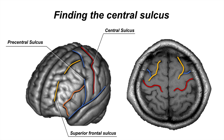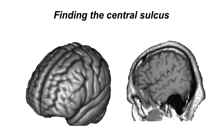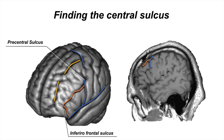This enables us to identify the precentral gyrus, or the primary motor cortex. From an axial perspective at the inferior level, the precentral sulcus can be identified as an oblique sulcus intersected by a horizontal sulcus corresponding to the inferior frontal sulcus.